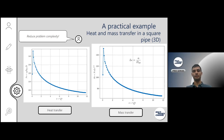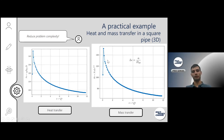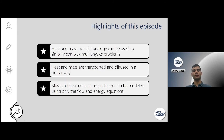Using the Chilton-Colburn analogy, the Sherwood number is directly calculated from the Nusselt number times the Lewis number to the power of one third. This gives a direct calculation of the mass transfer and mass fluxes, so we can determine how a liquid film close to the pipe wall — for instance water — might evaporate, by solving only the fluid flow and thermal equations.